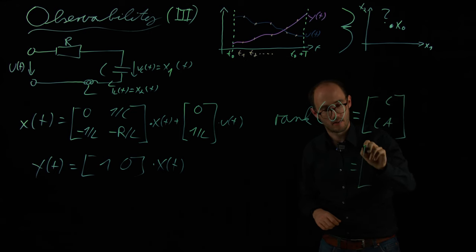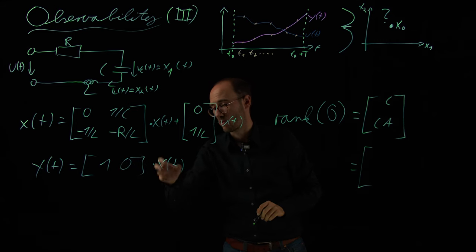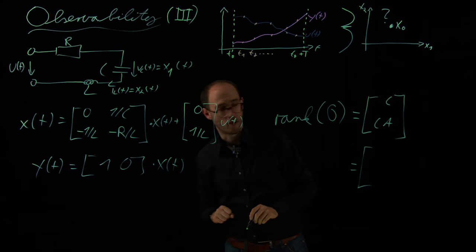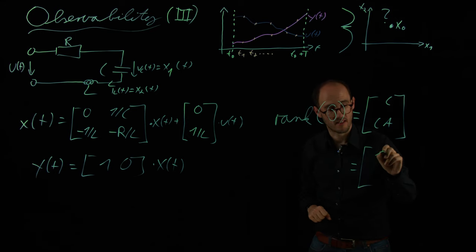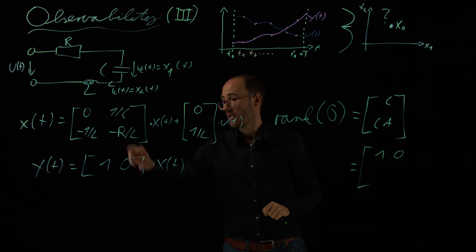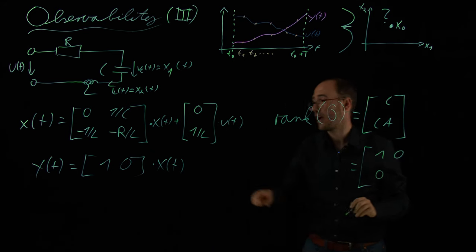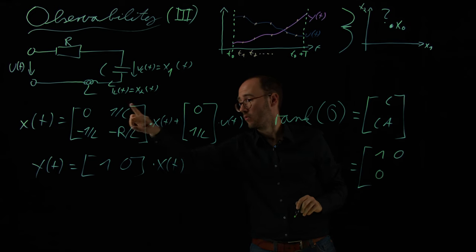And what is C? So this is C, our C vector in this case, because we have two states and just one output. So that is one, zero. And then we have C times A. So what we get from that is basically zero and then one over C.